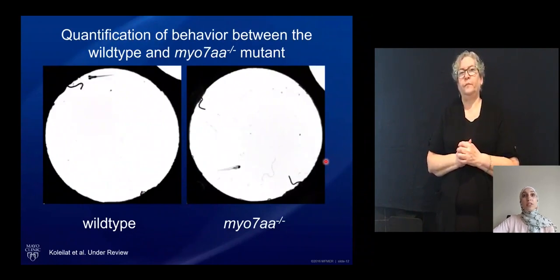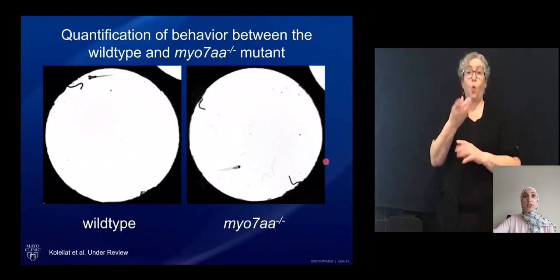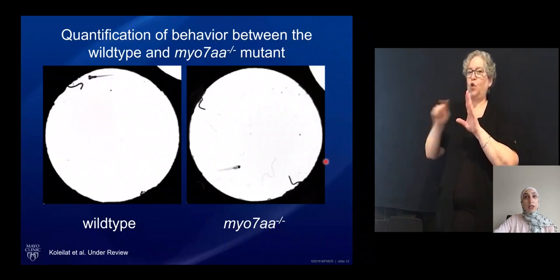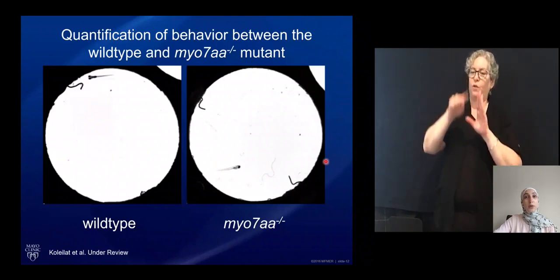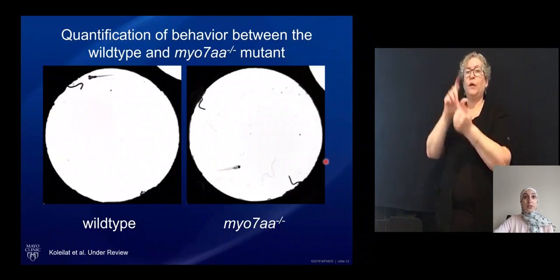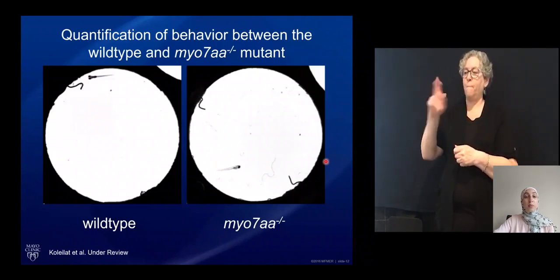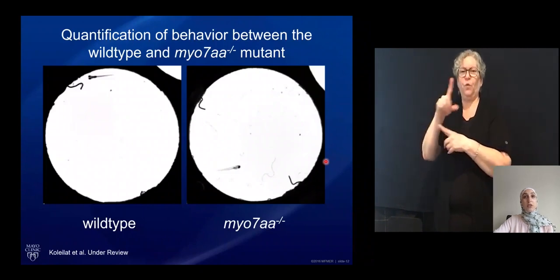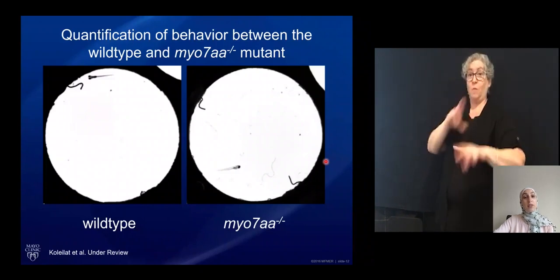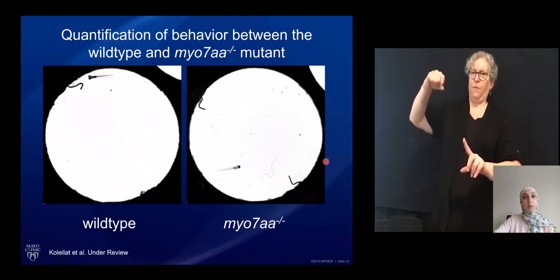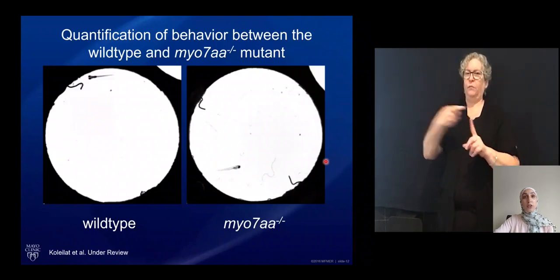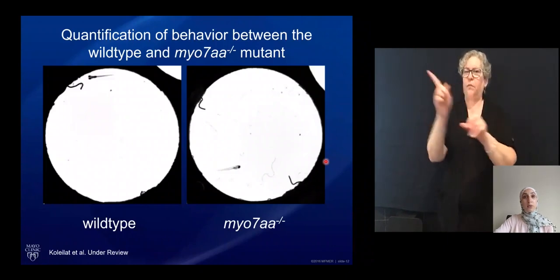As mentioned previously, this zebrafish line was originally characterized as a circling mutant. Therefore, in collaboration with Dr. Mark Massino at the University of Minnesota, we recorded videos of fish responding to a stimulus to quantify their swimming behavior. We calculated the turning angles of fish during their swimming episodes.